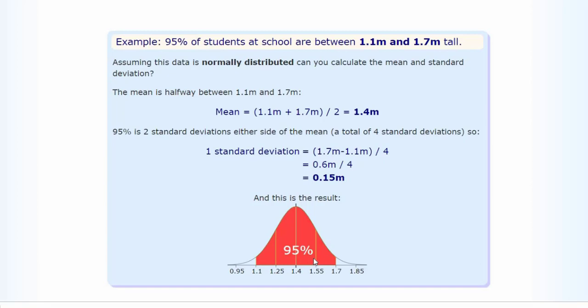Going further toward two standard deviations, 95% of the class is covered from 1.1 meters to 1.7 meters tall. So this is the concept of standard deviation with respect to mean.